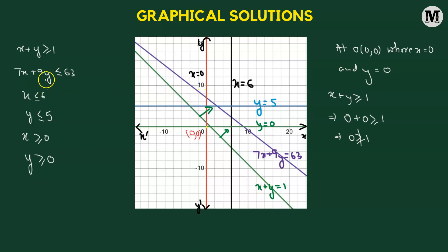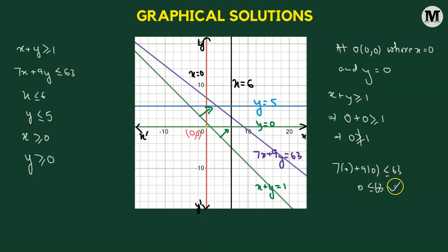For 7x plus 9y less than or equal to 63, we again test the origin (0, 0). We get 7 times 0 plus 9 times 0 less than or equal to 63, which gives 0 less than 63 — a true statement. This means the region containing the origin, lying below the indigo line, satisfies this inequality. So we consider the region below the indigo line and reject the region above it.